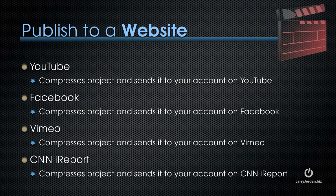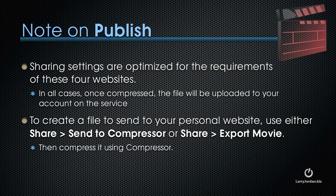We can also publish to four popular websites: YouTube, Facebook, Vimeo, or CNN iReport. I'll have a movie later in this chapter on how to output to YouTube. The benefit to using Share is that the settings are optimized for the requirements of these four websites, and in all cases, once the file is compressed, it will be uploaded to your account on that service. To create a file for your personal website, use either Share Send to Compressor or Share Export Movie, then compress the file using Compressor.